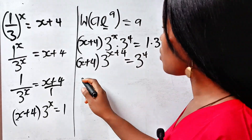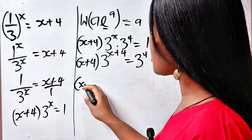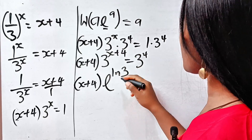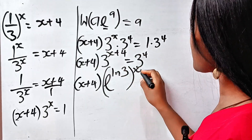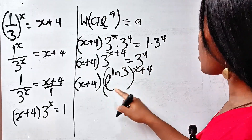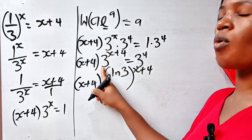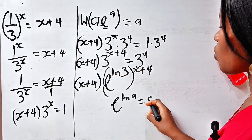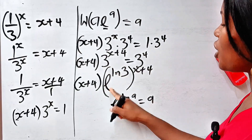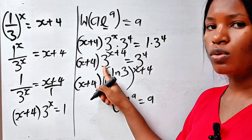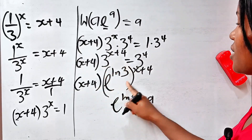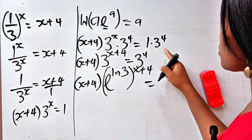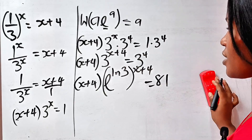So we write this as (x + 4) times e to the power of ln(3) raised to the power of (x + 4). Remember that e to the power of ln 3 is still equal to 3, so the whole thing, which is 3 raised to the power of (x + 4), is equal to 3 to the power of 4, which is 81.